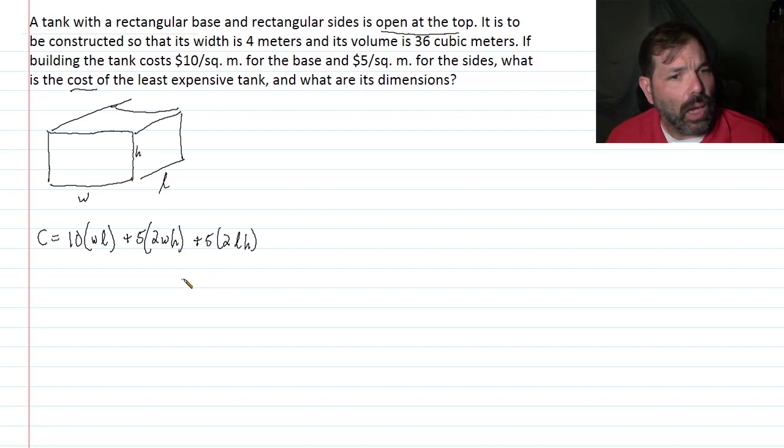So my cost model has three variables. So we can't do the calculus on this. We've got to try and get this down to one variable. So now, again, this was my objective. What constraints are on the problem?